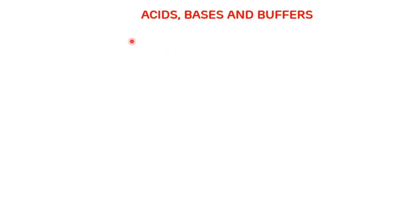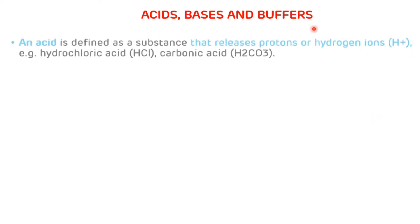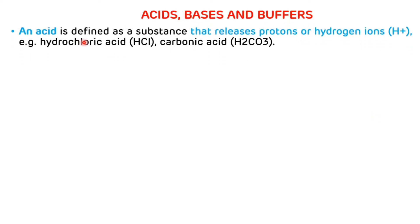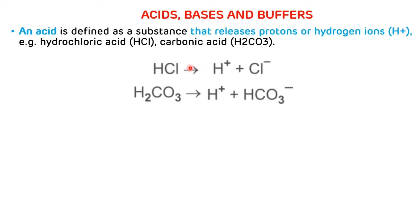First we will see the definition of acid, base and buffers. Acid is defined as a substance that releases protons or hydrogen ions. The examples are hydrochloric acid and carbonic acid. Hydrochloric acid dissociates into H+ and chloride ion, and H2CO3 dissociates into H+ and bicarbonate ion.